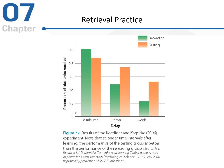Here's the actual data from that study. We have testing after five minutes, two days, or a week. The rereading group is in green and the testing group in orange. We see a sharper decline as a function of time in the rereading group overall. The reread group does a bit better than the testing group in the very immediate term, but even just two days after that there's a big shift — the testing group does substantially better than the rereading group, and this maintains throughout, with a more drastic drop in performance in the rereading group.